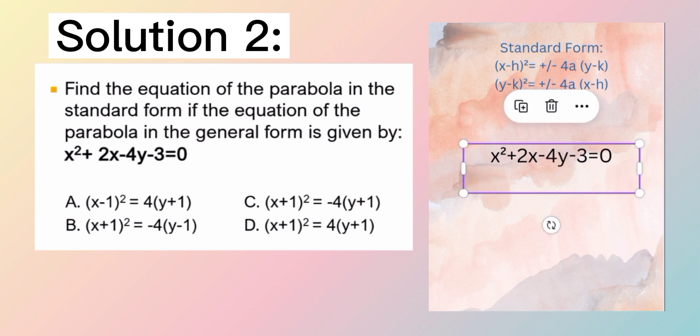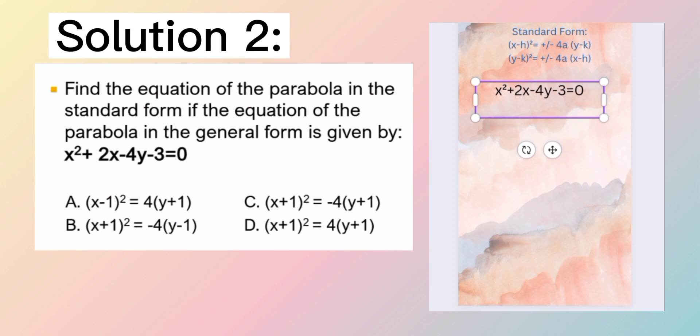Our general form to be converted to its standard form is x squared plus 2x minus 4y minus 3 is equal to 0. Therefore, ang susunta natin ay yung number 1 dahil si x yung nakasquared. Paano natin gagawin mag-completing the square? X squared plus 2x plus the second term. Paano natin kukunin yung third term natin? Second term divided by 2. Then, e squared natin or times itself. So, 2 divided by 2 is equal to 1 times 1 is equal to 1.